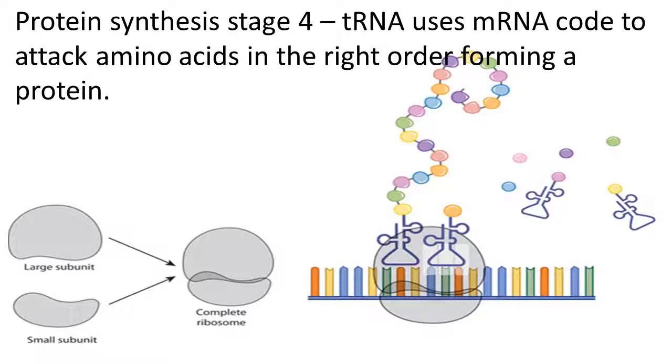If the tRNA docks at the appropriate three bases, the appropriate triplet codon, then it sticks to it and it attaches its amino acid to the last one. And then the next three are read by the next tRNA, and if it's correct it attaches and it sticks that amino acid to the previous one. And it goes along being read. The ribosome moves along this strand of messenger RNA like a conveyor belt.